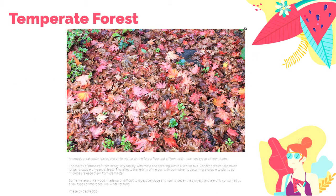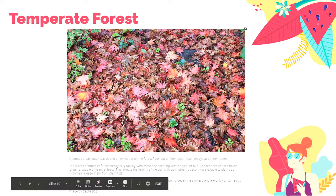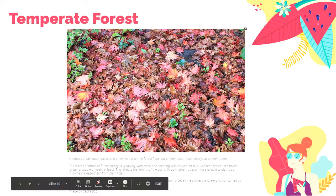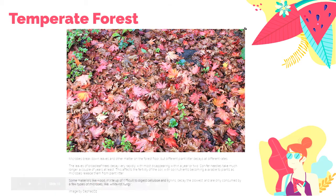Since the trees shed their leaves during fall or autumn, it's important for microbes to break down these leaves so that the nutrients can be recycled. The leaves of these broadleaf trees decay very rapidly, and some can totally disappear within a year or two. This affects the fertility of the soil — the dissolved nutrients will seep into the soil and can be used by other organisms by becoming available to plants. Some materials like wood also make it harder to be digested.